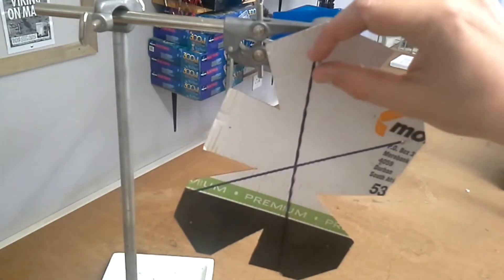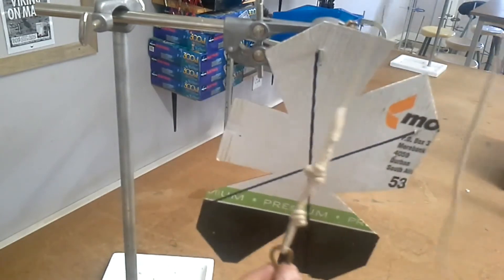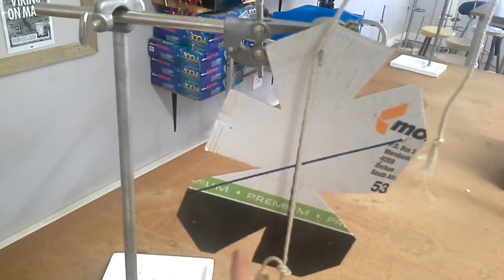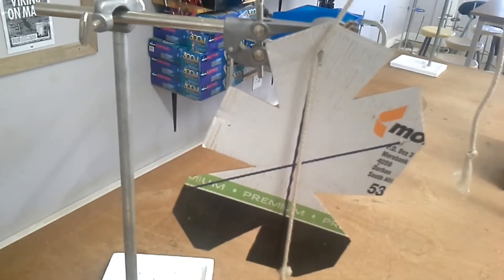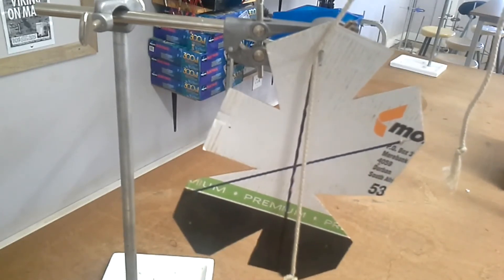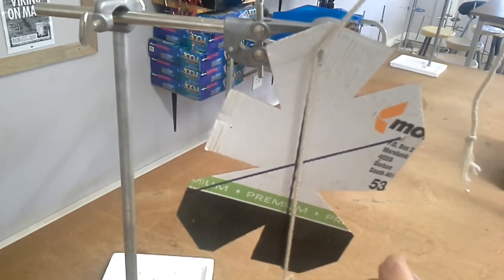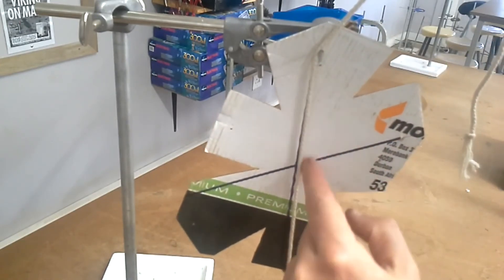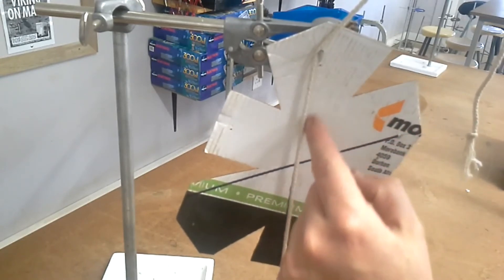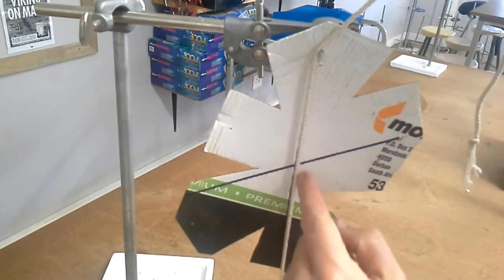You get your plumb line again and let it move freely and again let the lines line up. So draw a line on the back here, you'll see I've done it already, you draw a line down here.